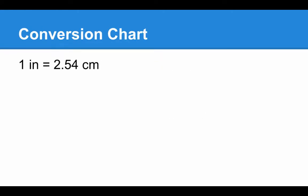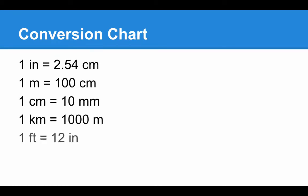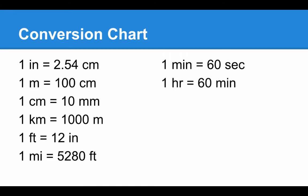Conversion chart. We're not going to do very many conversions. But you do need to be able to use a unit converter, which you can find on your Chromebook. Here's a conversion chart. One inch is about 2.54 centimeters. One meter is 100 centimeters. One centimeter is 10 millimeters. One kilometer is 1,000 meters. One foot is 12 inches. One mile is 5,280 feet. One minute is 60 seconds. One hour is 60 minutes.